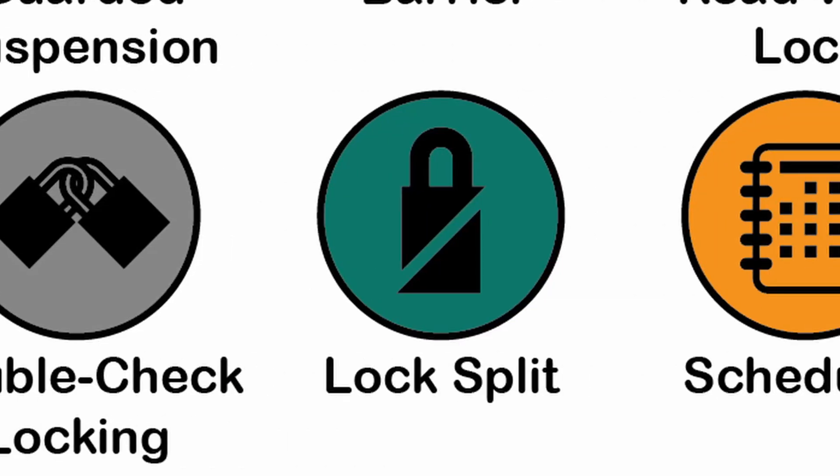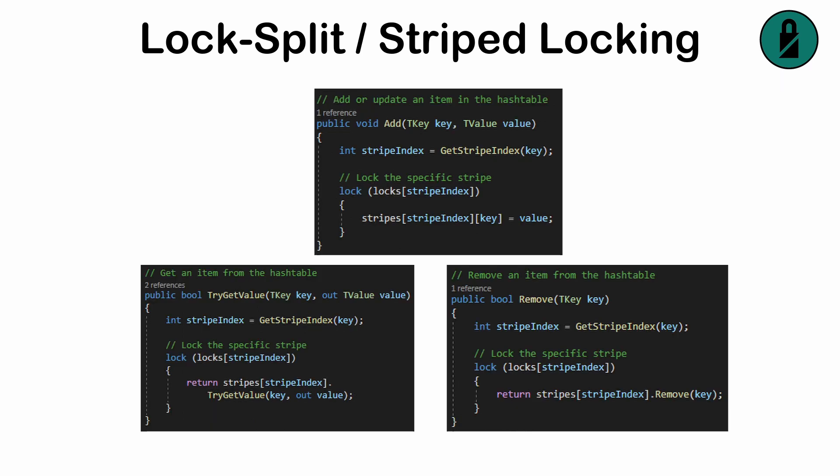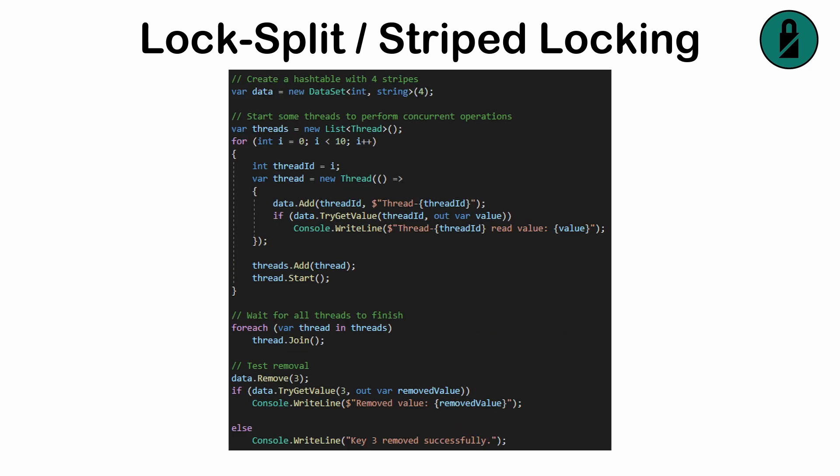The lock split, or striped locking pattern — a way to optimize performance by dividing locks across smaller regions of data, like having multiple checkout lines at a store instead of one. It's ideal for large datasets where multiple threads can work independently, such as hash tables. However, it adds complexity in managing locks.